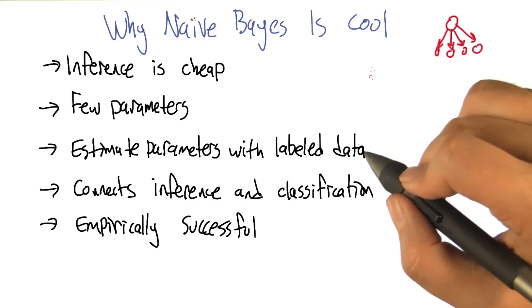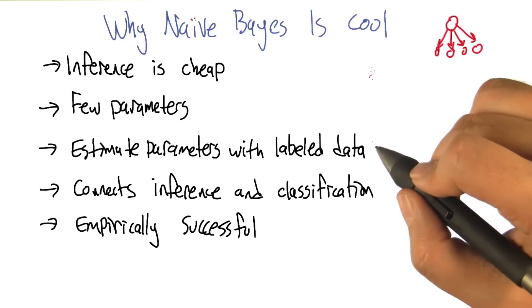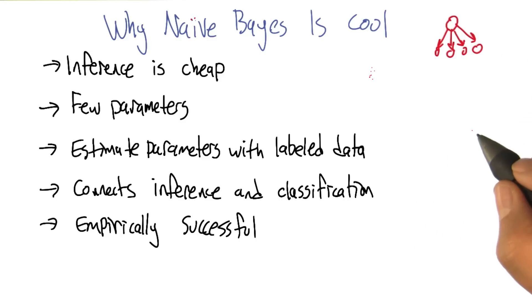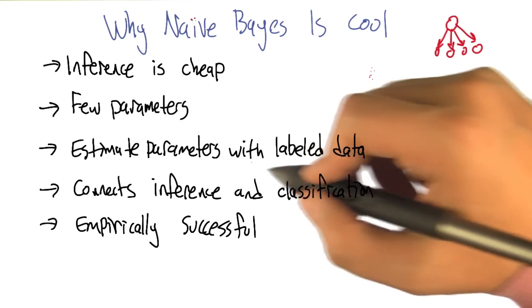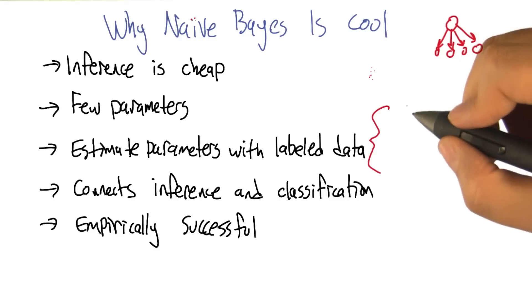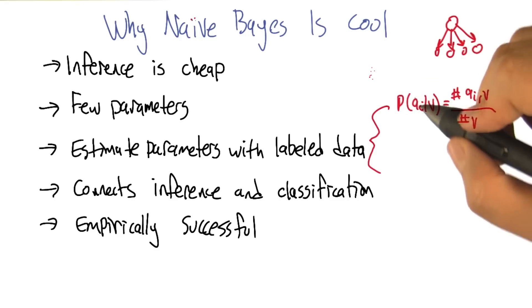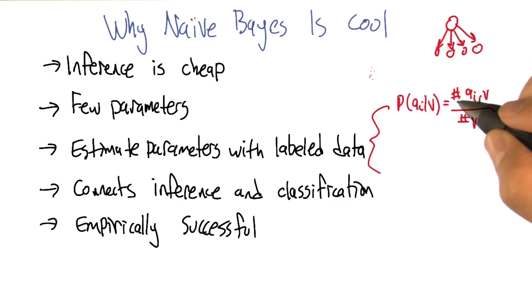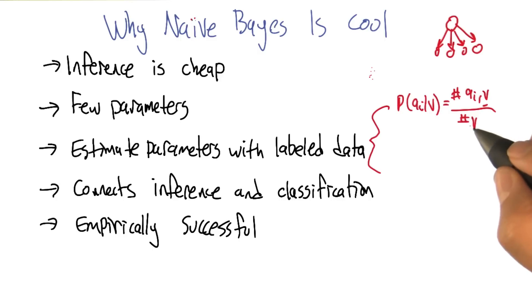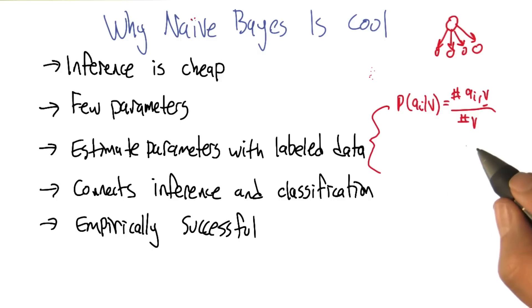We can actually estimate these probabilities. So far we've only been talking about Bayes nets in a setting where we just write down what all the numbers are, but we can actually very easily estimate these parameters. The easy way to do it is you count. When you're trying to estimate the probability of a particular attribute value given a class, it's really just: in your labeled data, how often do you have an example with that attribute value in that class, divided by the number of times you have that class at all — and that gives you the conditional probability.